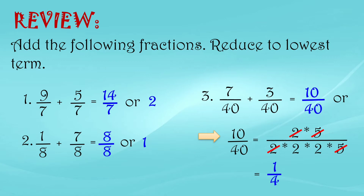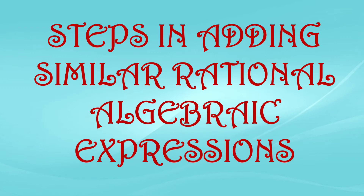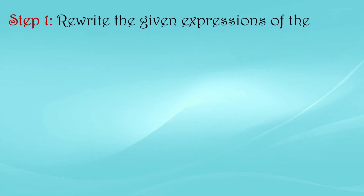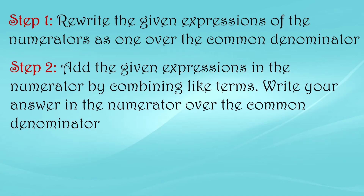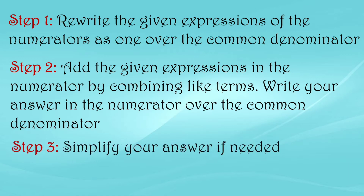We use factoring to simplify when adding rational algebraic expressions. The steps are: Step 1 — write the given expressions of the numerators as one over the common denominator. Step 2 — add the expressions in the numerator by combining like terms and write your answer over the common denominator. Step 3 — simplify your answer if needed.